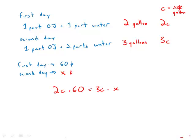Well, the C's cancel right away. So I get two times 60 equals three times X.